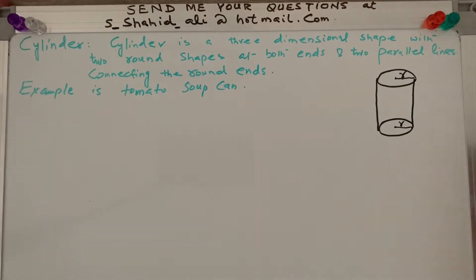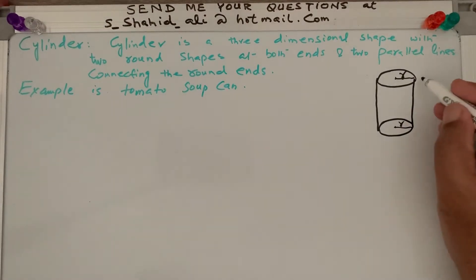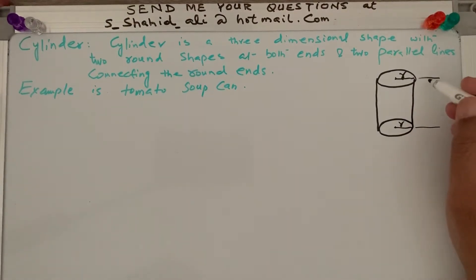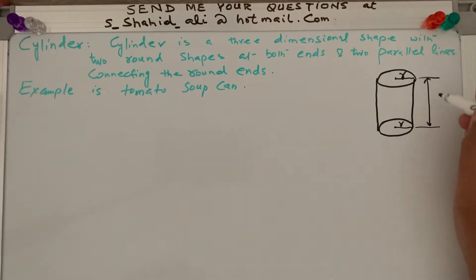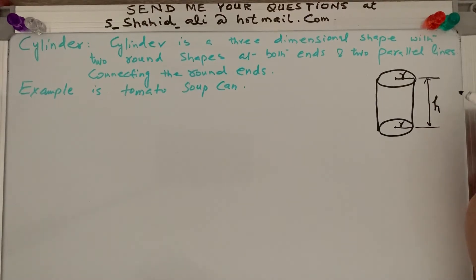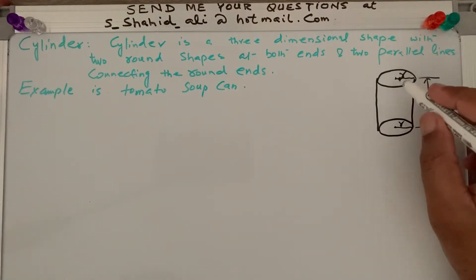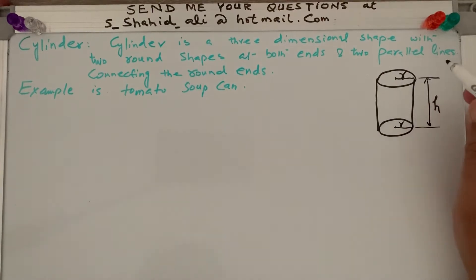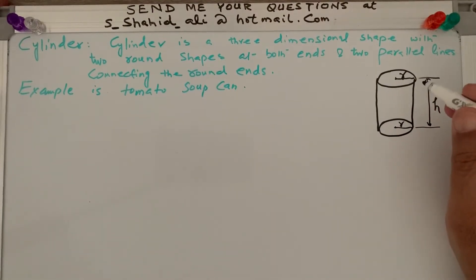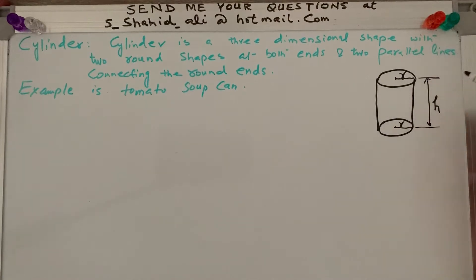The distance between the two centers of the circular ends is called the height of the cylinder. And if it is a circular shape, then you have a radius of the circle as well. These are the two key measurements, and then we look at how to find the volume.